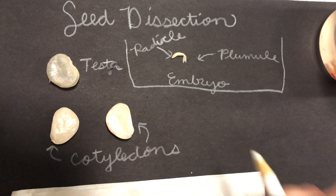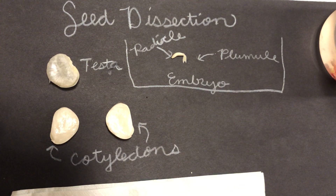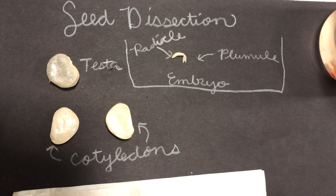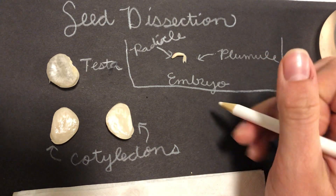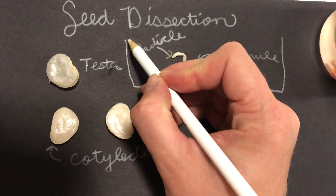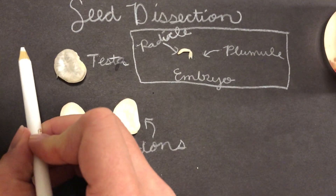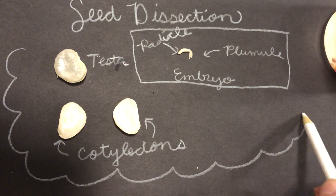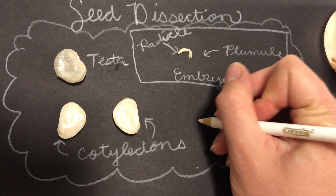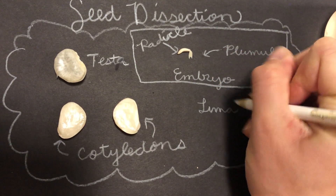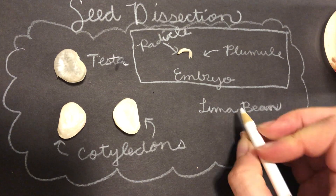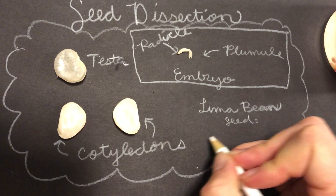Now, if you notice right here, we have two cotyledons from this seed. This was a lima bean seed. The lima bean seed would be a dicotyledon. So the lima bean seed equals a dicotyledon.